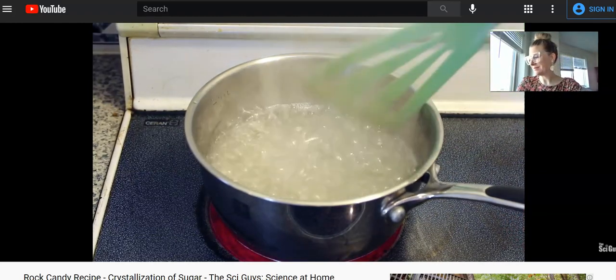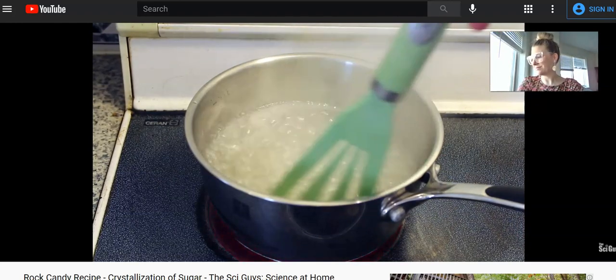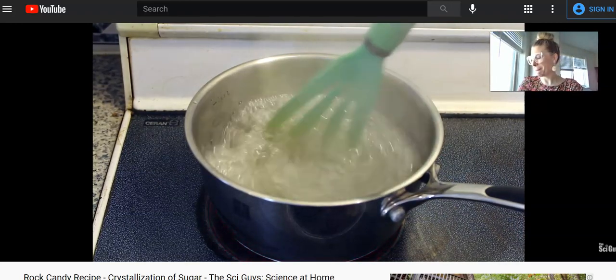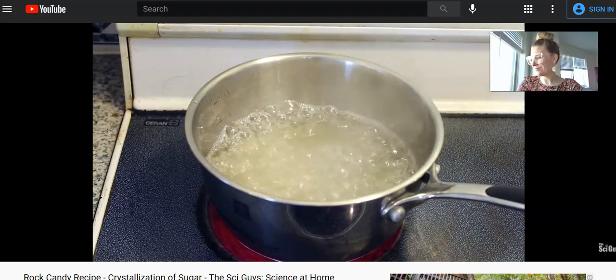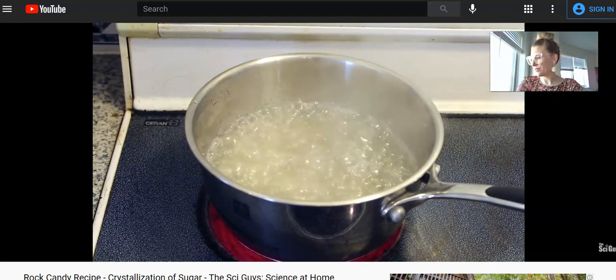Once your solution begins to boil, stir it rapidly until all the sugar has been mixed into the solution. Once all your sugar is mixed in, this is a great time to add any flavoring or coloring. Once you're done mixing in all your sugar, colors, and flavors, remove from the burner.